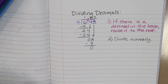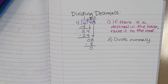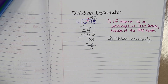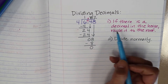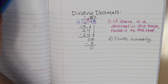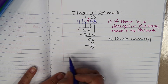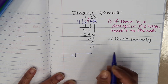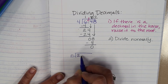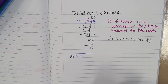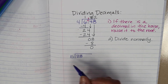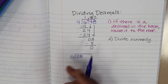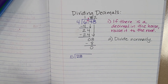Now I'm going to show you a way to divide a number that doesn't have a decimal, but I want to get rid of the remainder. Let's use an example — 28 divided by 5. My goal is to make it so I don't have a remainder. I know that sounds kind of weird right now, but I think you'll understand once we get into it.